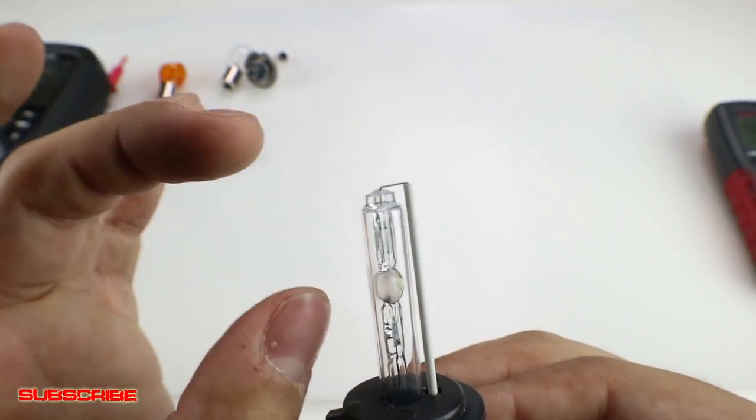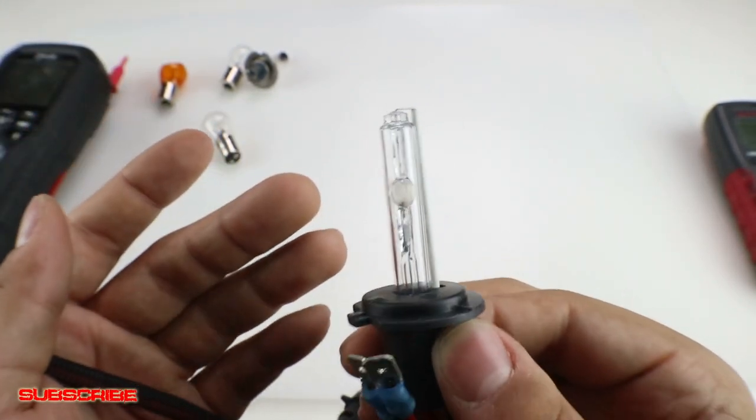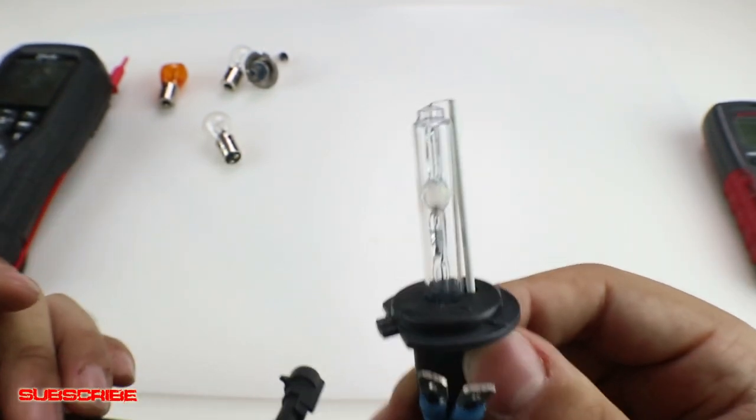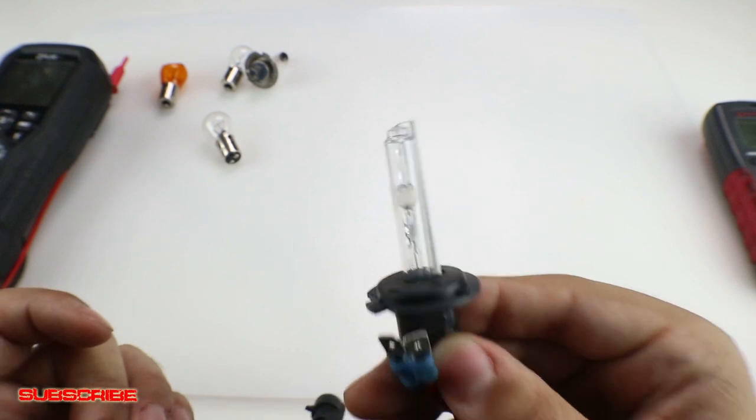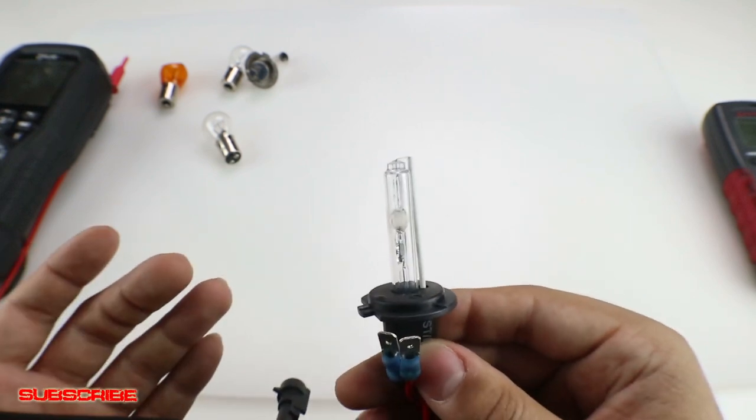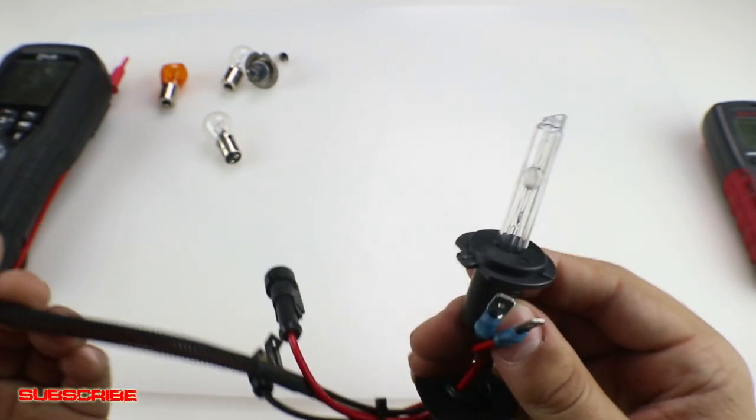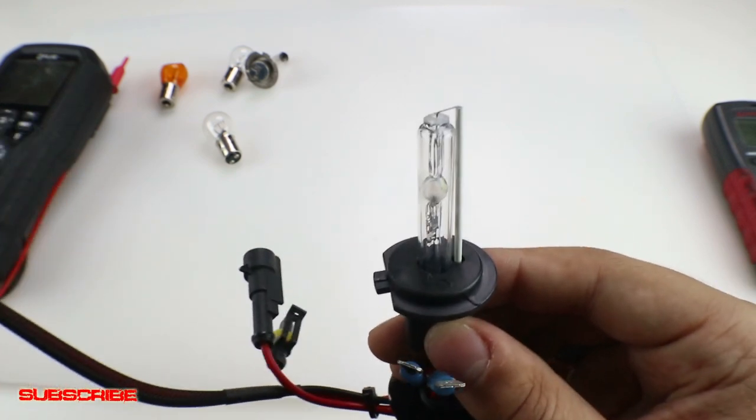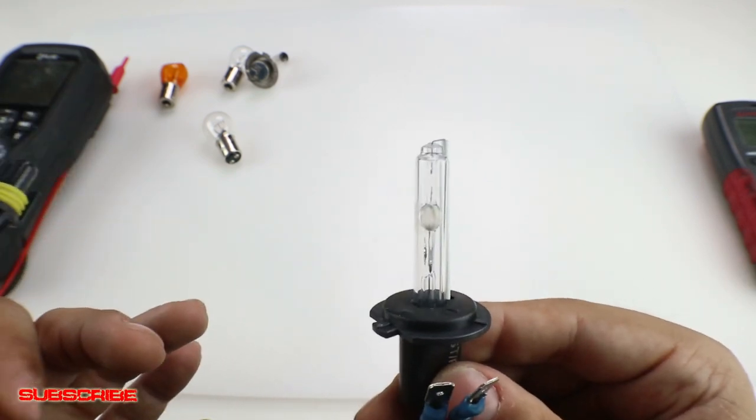So you will not be able to test this the traditional way to see if an HID will work. The best way to do it is to actually get a known good HID bulb and swap it out and see if it works. There are other components of HID systems, so that may not be the only thing that could be wrong. But if you're suspecting that the bulb is the problem, that's really the only way to check to see if it will work.